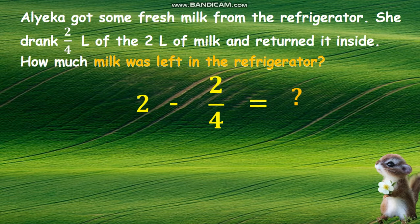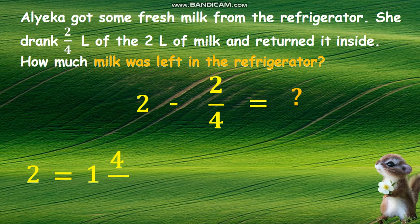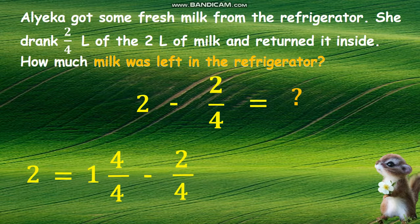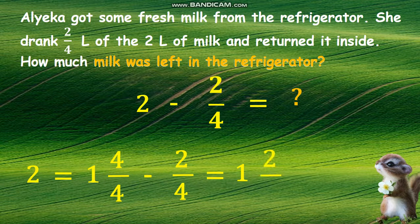First, we will rename the whole number two as a mixed number with the fraction equal to one. Use the same denominator as in the given fraction, or with the subtrahend two-fourths, and that is four. Subtract now one and four-fourths minus two-fourths, starting with the whole number one minus zero equals one, or you may just copy the whole number one. Next is the numerator four minus two equals two, and copy the common denominator four. Just like you subtract similar fractions. The difference is one and two-fourths.